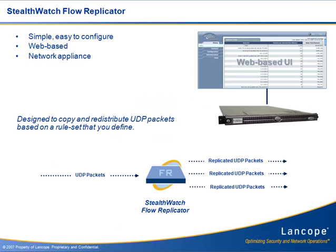The Flow Replicator is a simple, web-based network appliance designed to copy and distribute UDP packets based on a rule set that you define. As UDP packets such as NetFlow messages or SNMP traps are received by the Replicator, they are copied and retransmitted to the IP destinations of your choosing while preserving the original source IP and packet payload in the retransmitted packets.